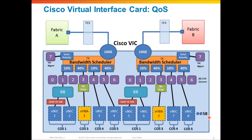Remember, we can have as many as 58 adapters on this card, and we can do the same thing on the other side for other adapters that have been defined to use Fabric B. Now, if you have more than one adapter assigned to the same class of service, how does that work?